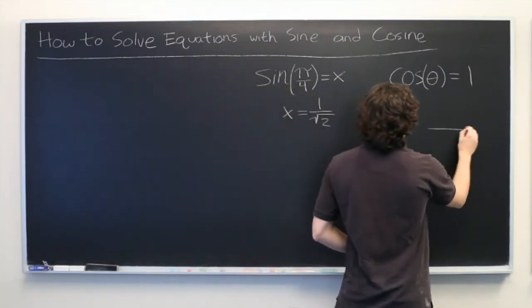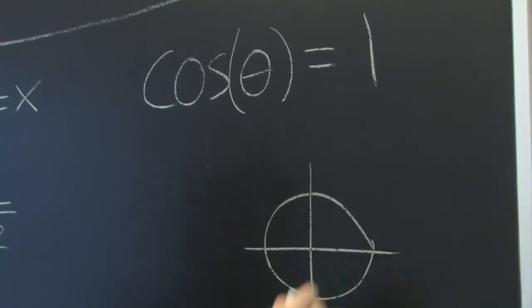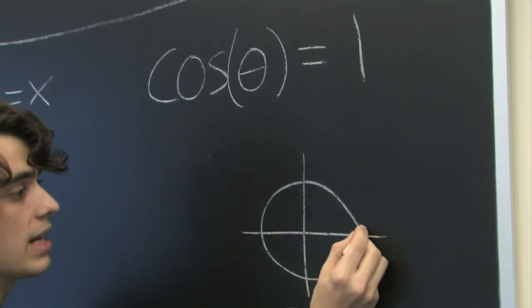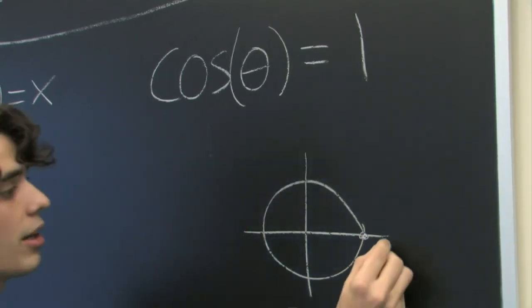Now if we draw ourselves a unit circle, we recall that cosine of theta is 1 right here, and theta equals 0.